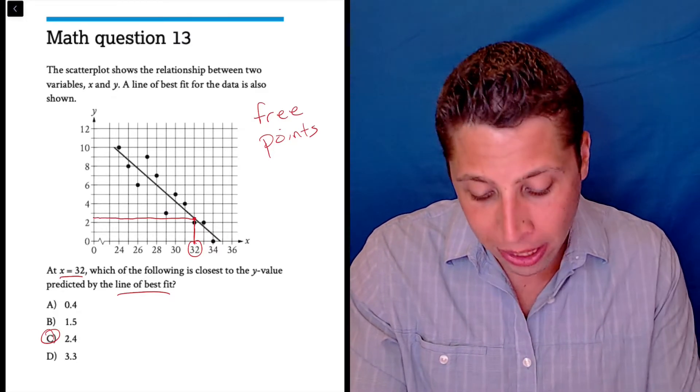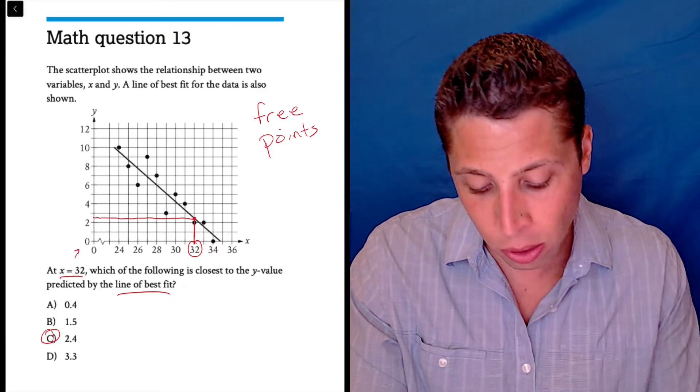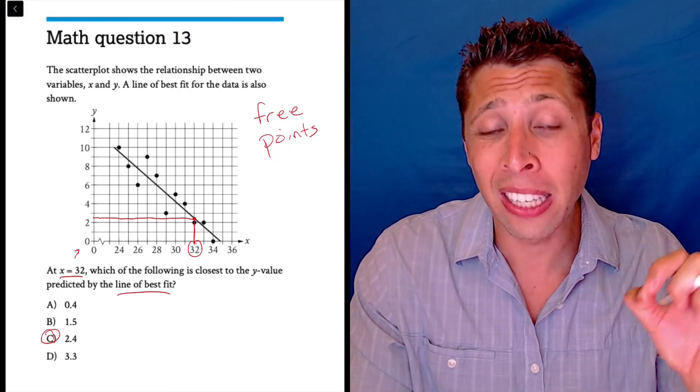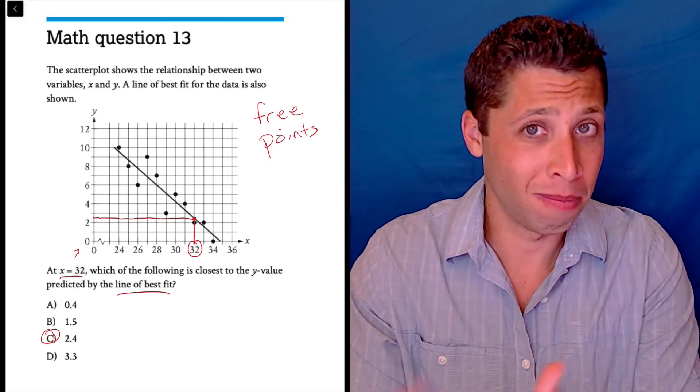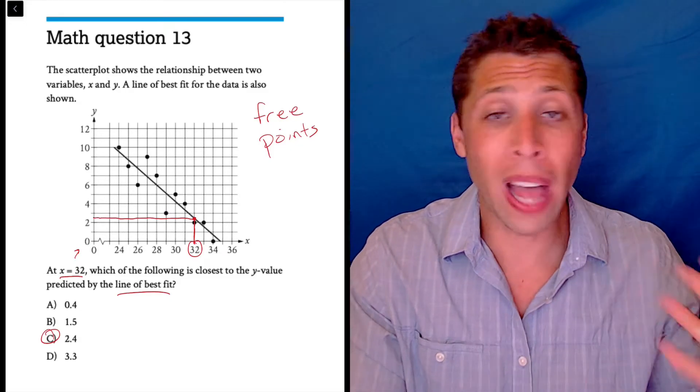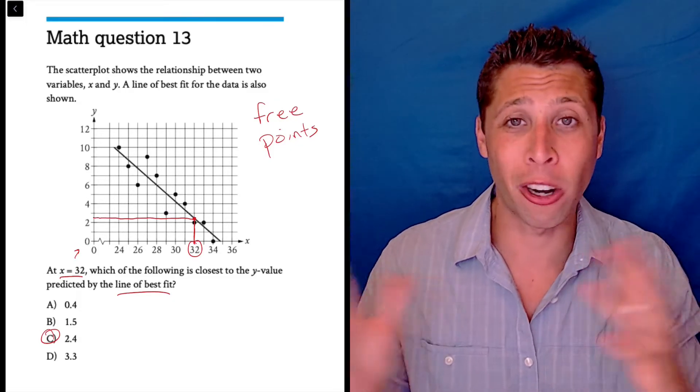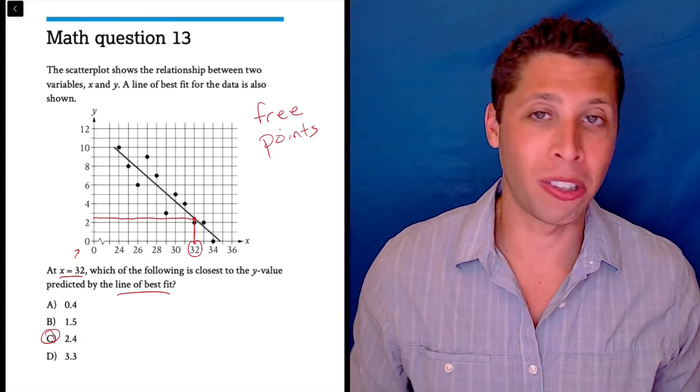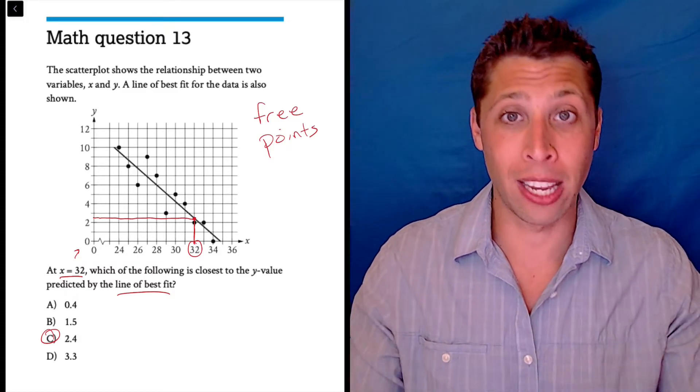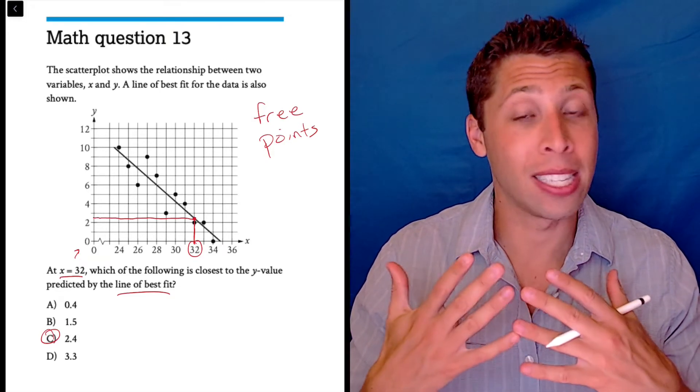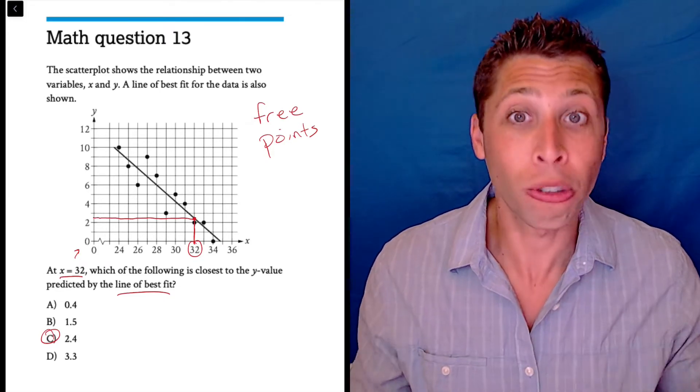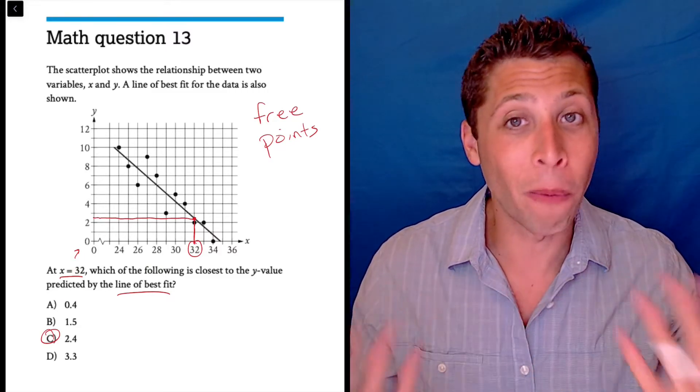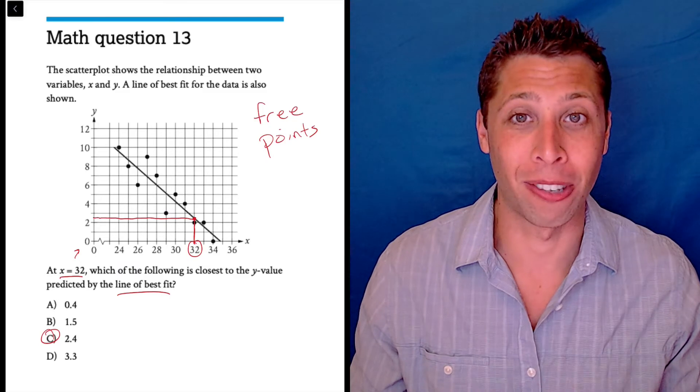It's the whole question. We need to pay attention to the scale, because it's weird here. They only label every other line, but the scale is still one unit per box, so that might change. There might be harder versions of this where they mess with the scale and it's kind of harder to read it correctly. But you still want to go into a question like this with that free points idea in your head. They're handing them to you. Don't screw it up. Just read it carefully, follow it as best you can, and hopefully you can just see what the right answer is.